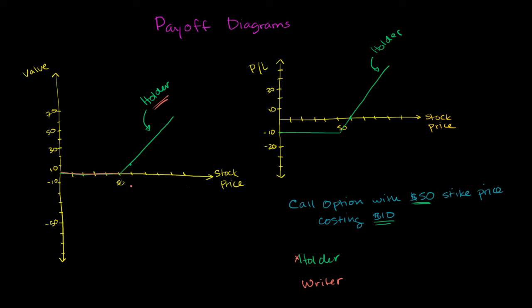So the writer's payoff would look something like this. Once again, it's the mirror image of the payoff of the holder. If you think about the profit of the writer, if the option is never exercised, then the writer just gets to keep the $10 that they sold the right for. But then if the option is exercised, then they start to lose money. And their break even, once again, is at $60. And anything above that, then they start to lose more and more money.